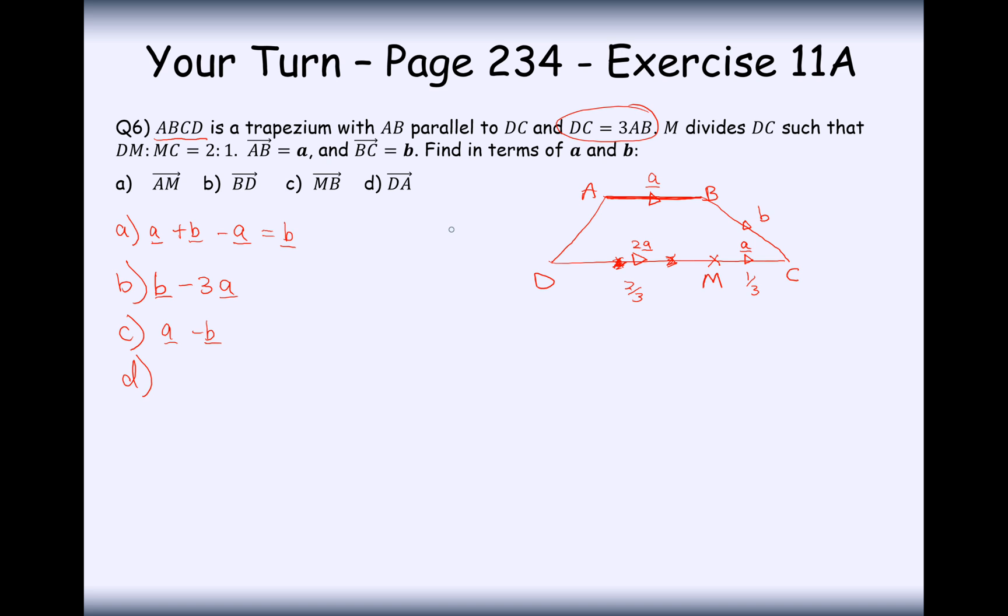And for D to A, it's straight along there, but you can't go along there. So it would be 3a's, take away a b, and take away another a. So it's 3a take away b and take away an a. Simplify and we get 2a minus b.